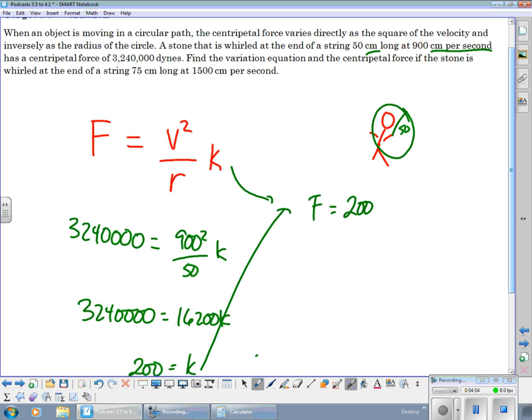Velocity squared divided by your radius. So, now it says find the variation equation. Check. Find the centripetal force of the stone's world.